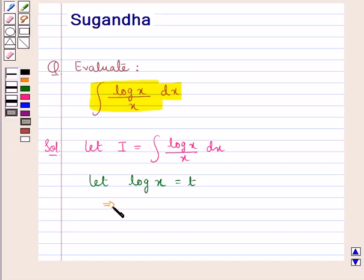Now differentiating both sides, we get 1 upon x dx is equal to dt. Since we know that d by dx of log x is equal to 1 upon x.